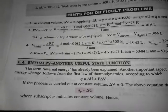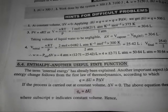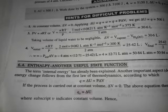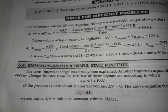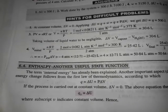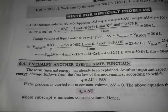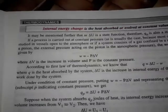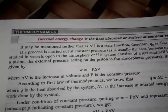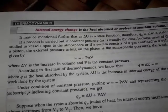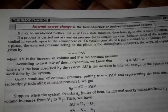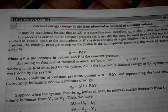According to the first law of thermodynamics, q is equal to delta U plus P delta V. If we do a constant volume process, delta V is zero, so qV equals delta U. This means the heat involved at constant volume equals the internal energy change.